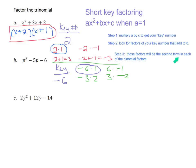Those factors — negative 6 and 1 — will be the second term in each of the binomials. Opening our parentheses, we're going to have p in the first term. The first factor is negative 6, so we put minus 6, and the second factor is positive 1, so we put plus 1. That's our final answer: p minus 6, p plus 1. You can go ahead and FOIL that out to check that it works.